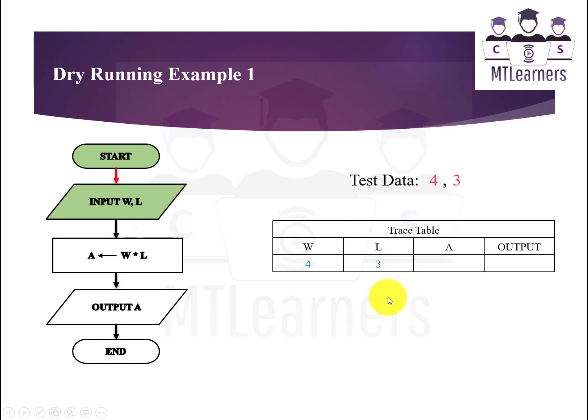Then next is the processing box for processing of the inputs, so you will multiply 4 with the value 3, that is width multiply by length, and you will get the area value that is A. So 12 is obtained and it is placed in the box under A. Now output A means the value of A will be output, and you can see here 12 is written in output box, and then program is ended.